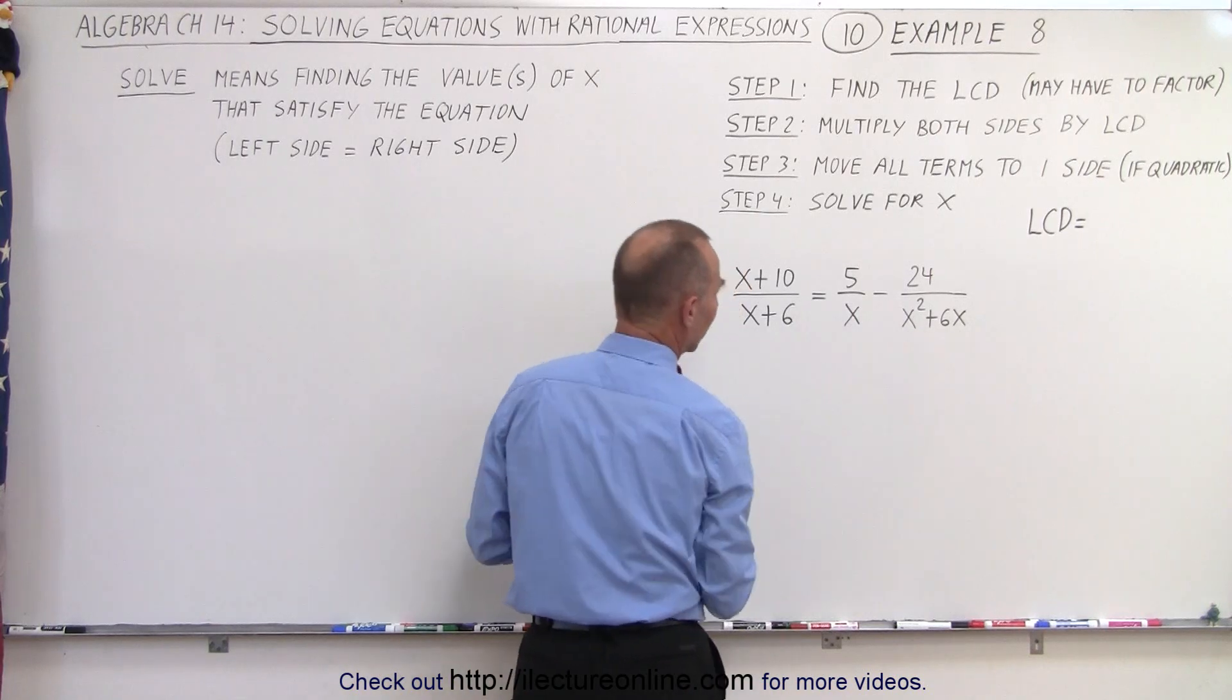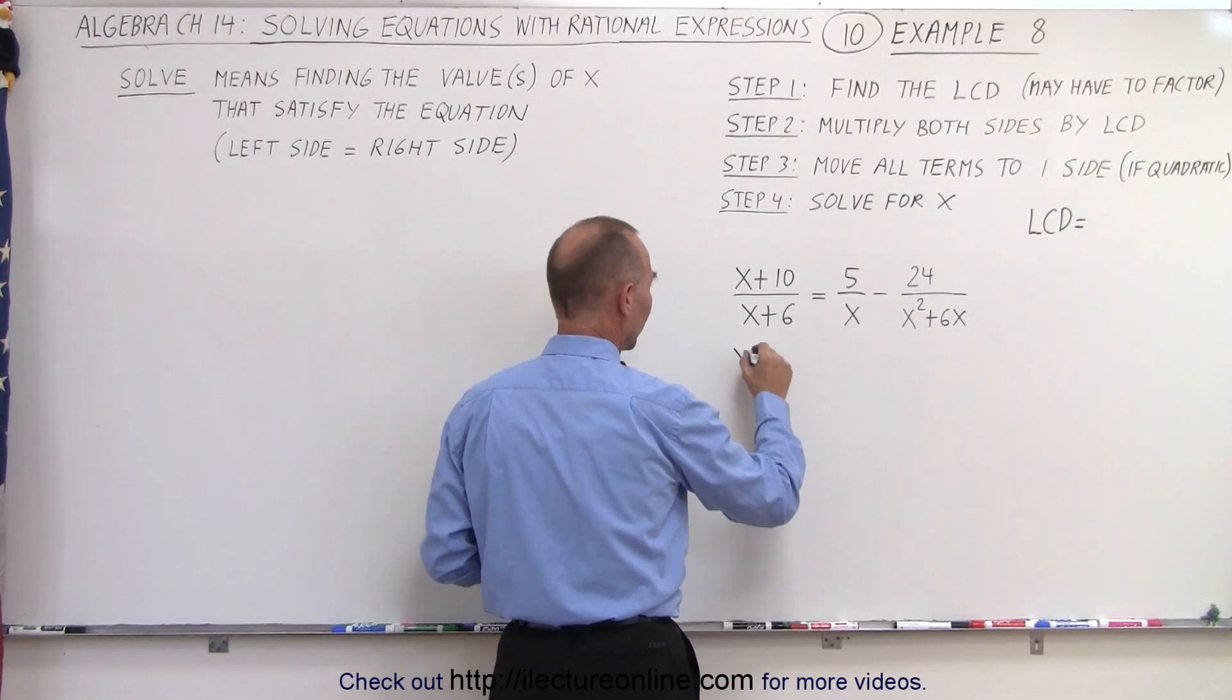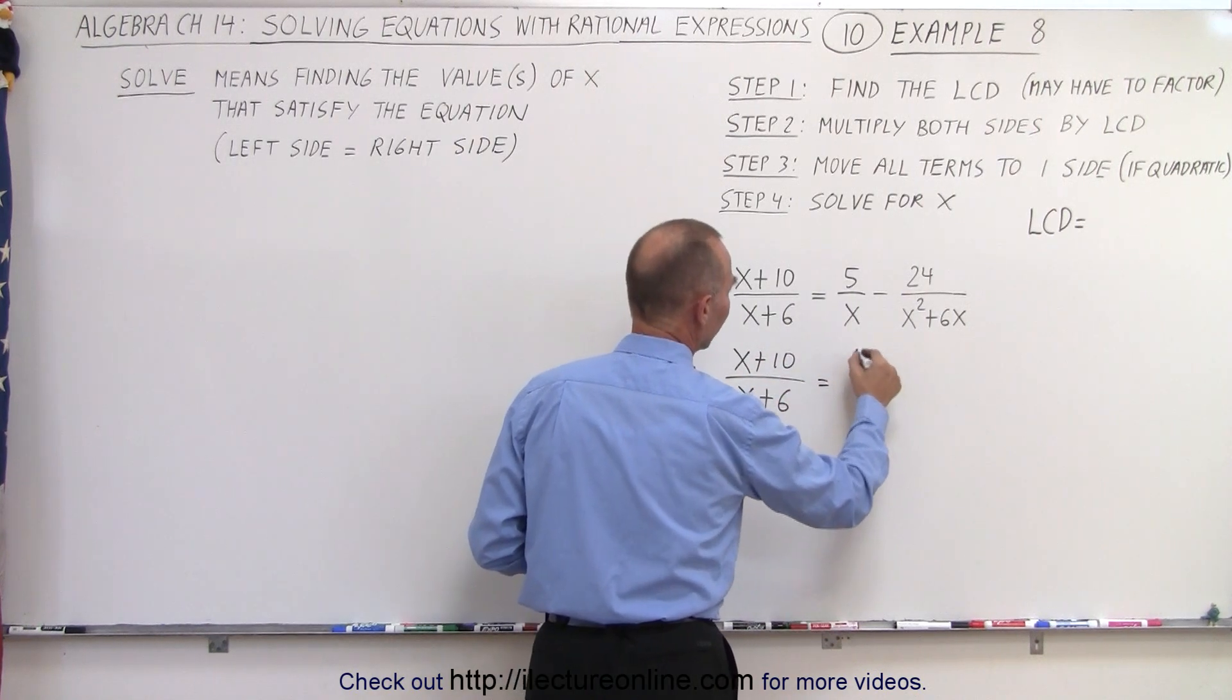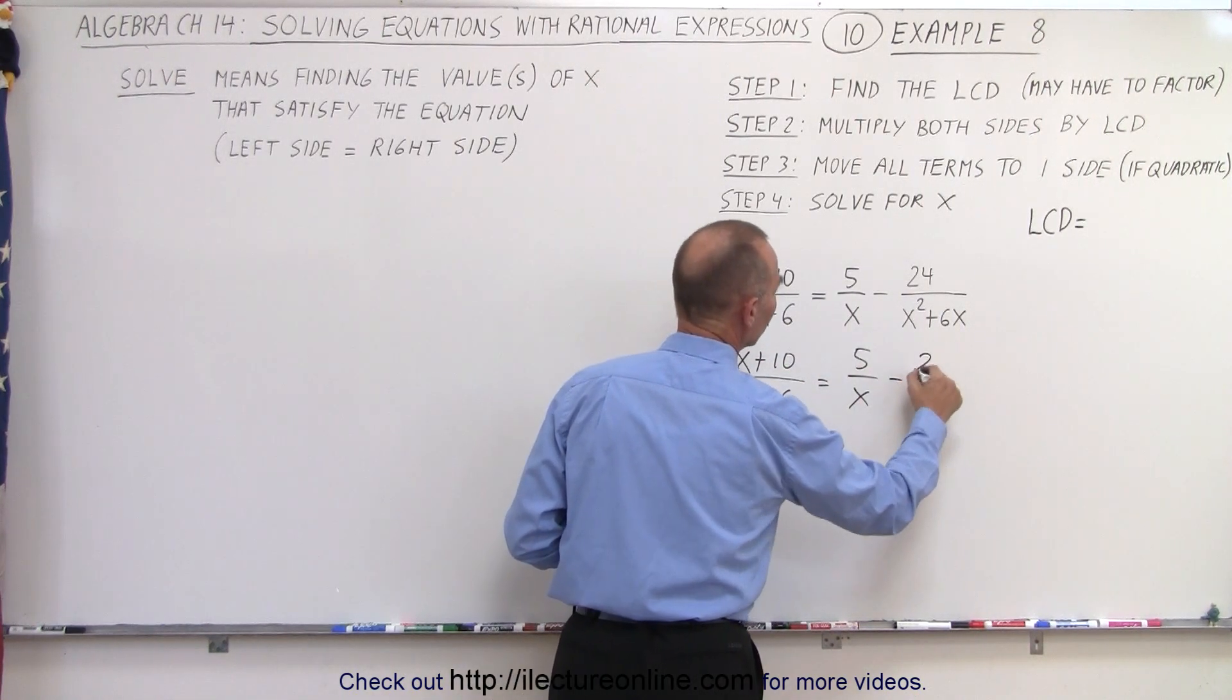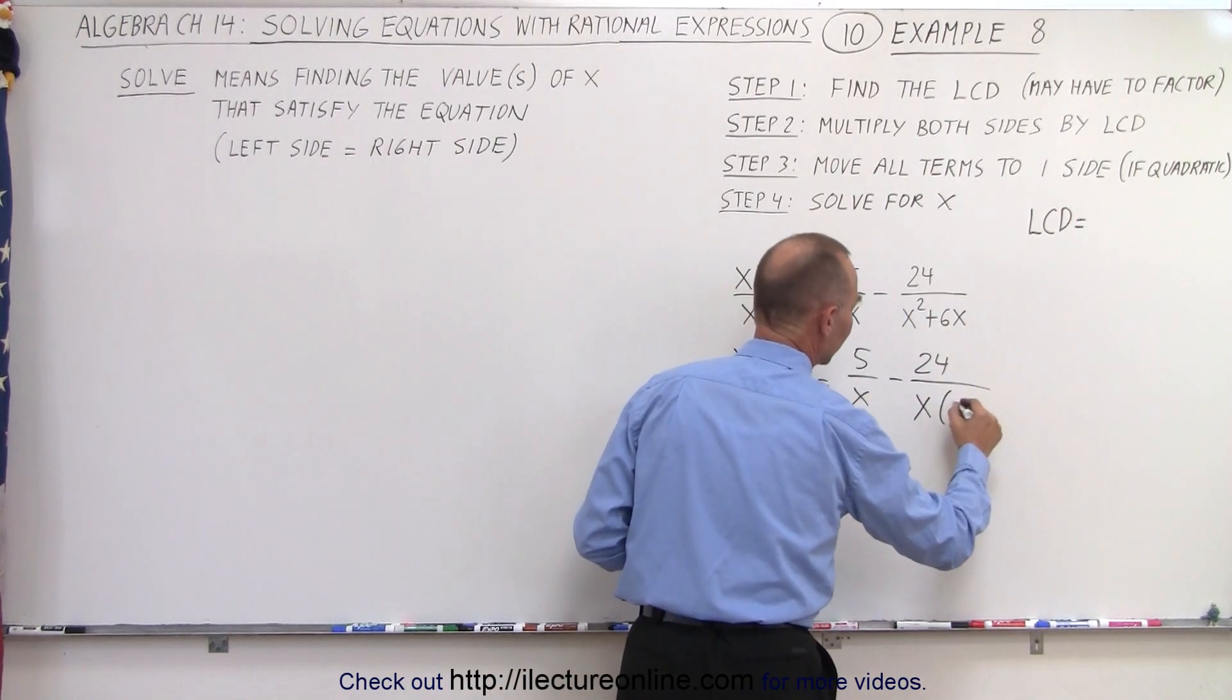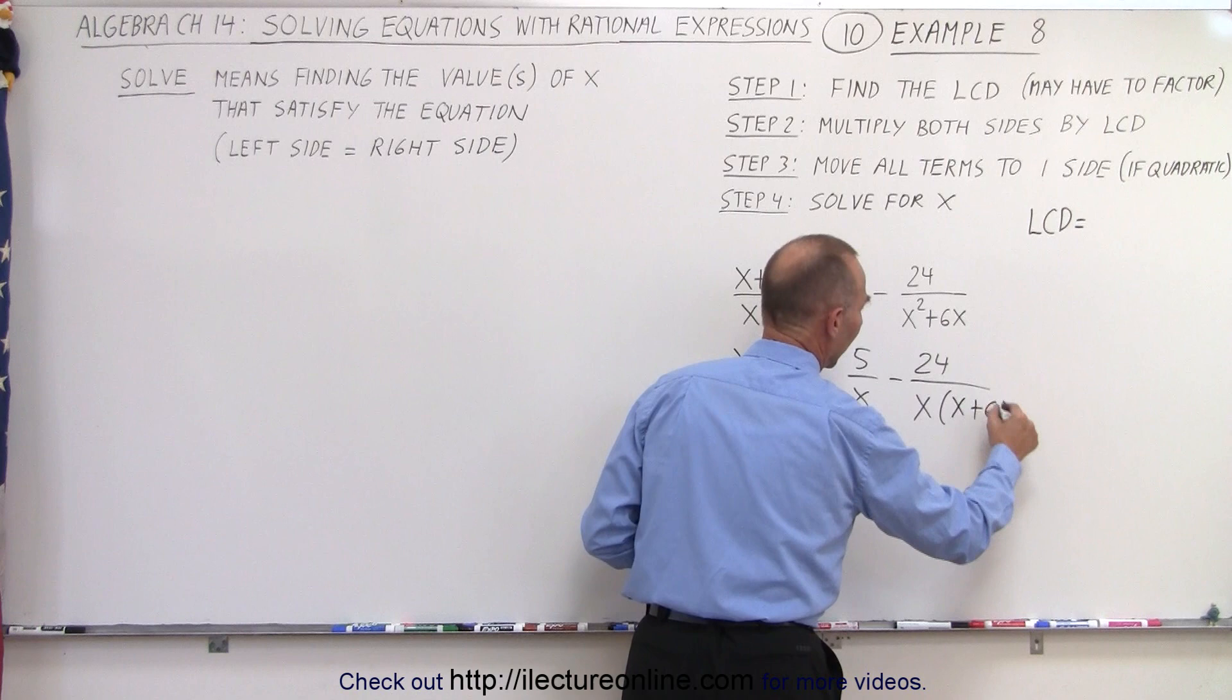So we're going to factor this denominator right here. This becomes (x+10)/(x+6) = 5/x - 24 over... and when we factor out an x we get x times (x+6).